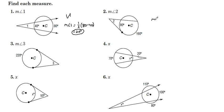Angle two, we take one half of 160 minus 80. 160 minus 80 is 80. One half of 80 is 40.